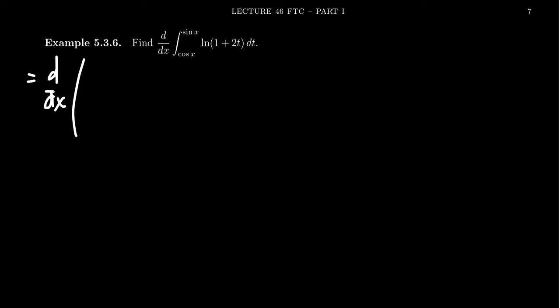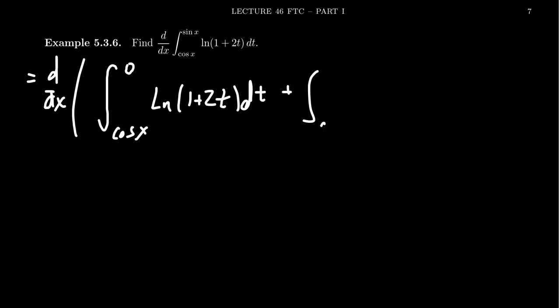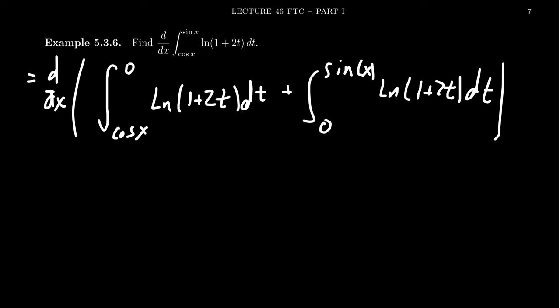First, we break it up into two integrals by inserting a middle number. We take the integral from cosine(x) to 0 of ln(1 + 2t) dt and add it to the integral from 0 to sine(x) of ln(1 + 2t) dt. We use zero as the intermediate value — it doesn't matter what constant you choose, but zero is typically a good choice to keep the arithmetic cleaner.